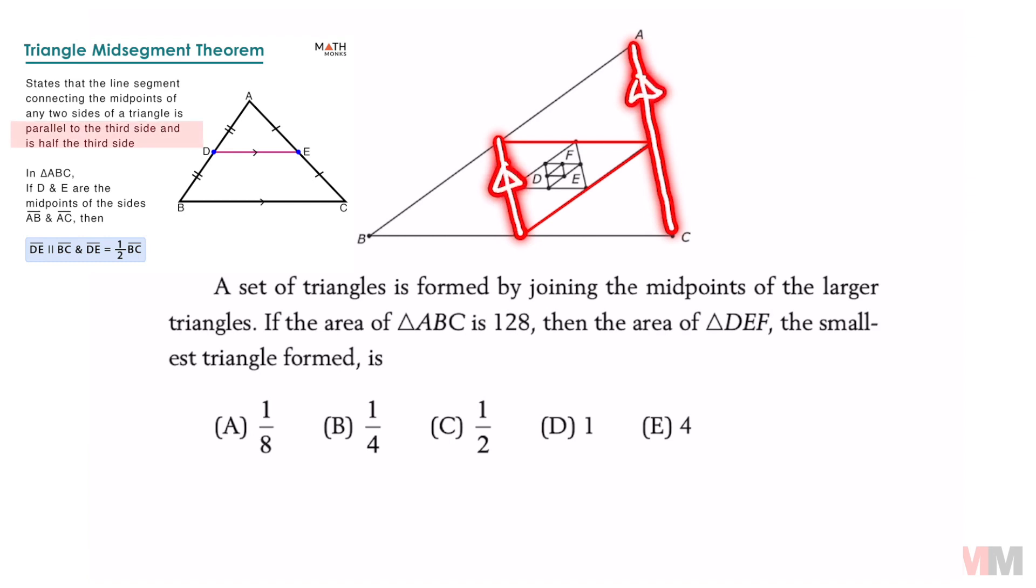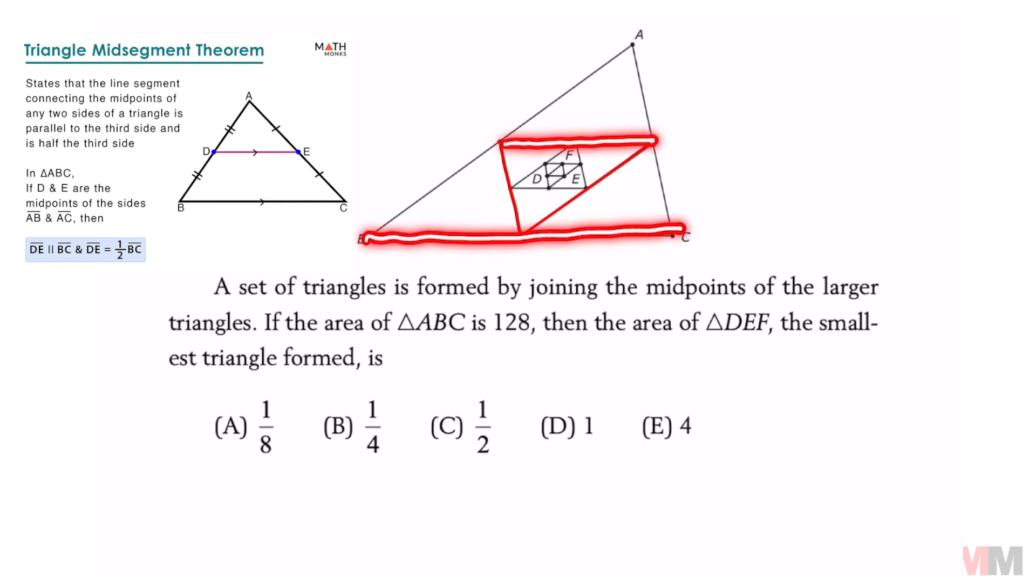And most importantly, the length of the red triangle is going to be one half of whatever the bigger triangle is. That is going to be the same for all the corresponding sides of the two triangles, where this is going to be one half and they're going to be parallel to each other.